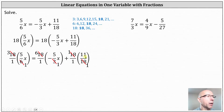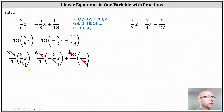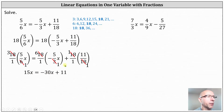And now we multiply. Going back to the left, we now have 3 times 5x, which is 15x. Equals on the right, we have 6 times negative 5x, giving us negative 30x, plus 1 times 11, giving us plus 11.